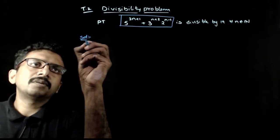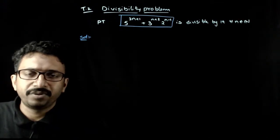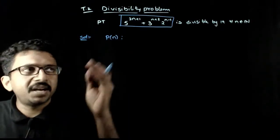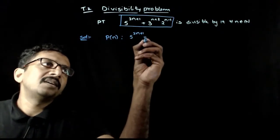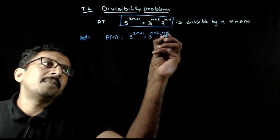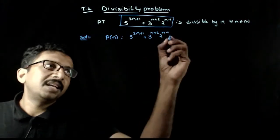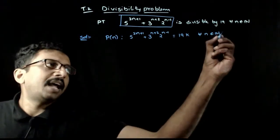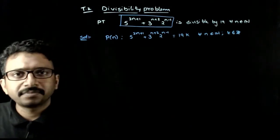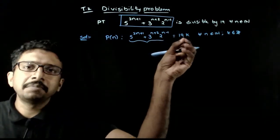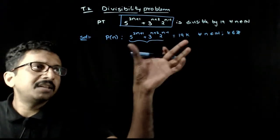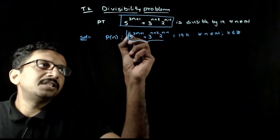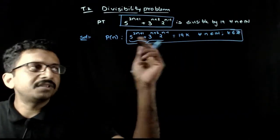What is the statement that is being asked to be proved? If you want to write it mathematically, the statement P(n) says that 5^(2n+1) + 3^(n+2) · 2^(n-1) is divisible by 19 — that is, this equals 19 times some k — for all n belonging to natural numbers and k belonging to integers. You have to prove that this number is always of the form 19 times something, making it a multiple of 19. We can use the principle of mathematical induction.